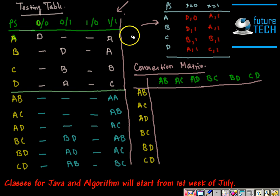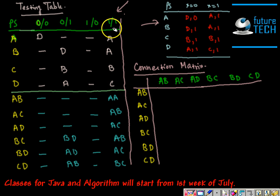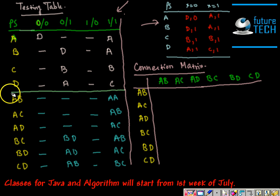This is the machine we are given, and this is the testing table that I have developed from this machine. This is the same testing table that I used for the last tutorial, where I already built it and showed you how to build it, so I'm not going through that again. Now using the lower part of this testing table, you can build the connection matrix.